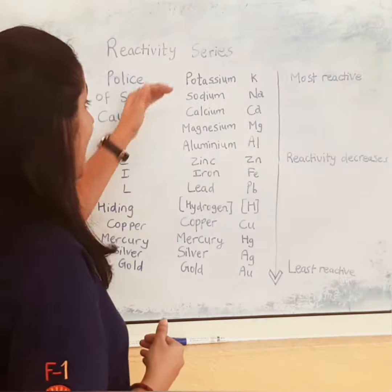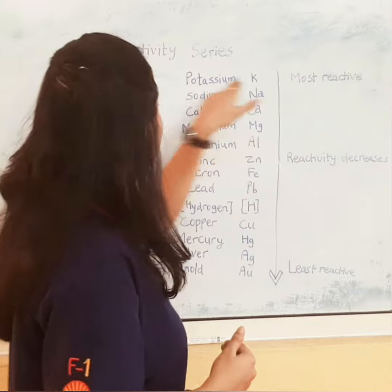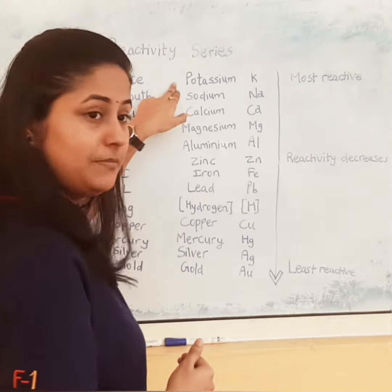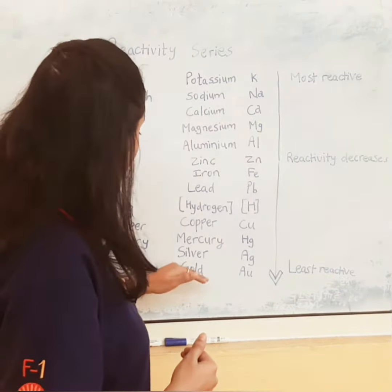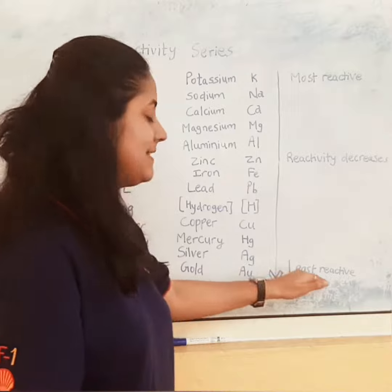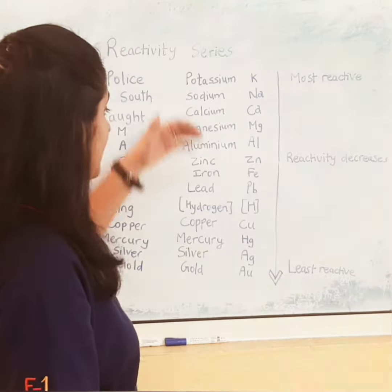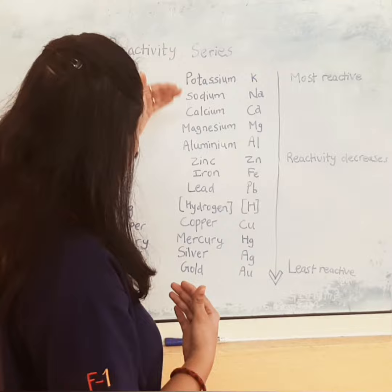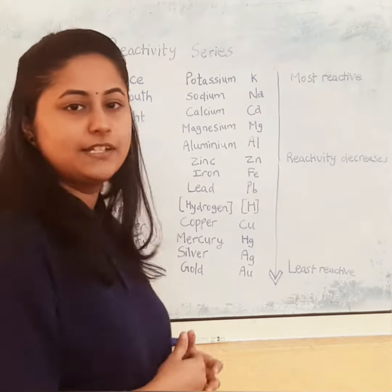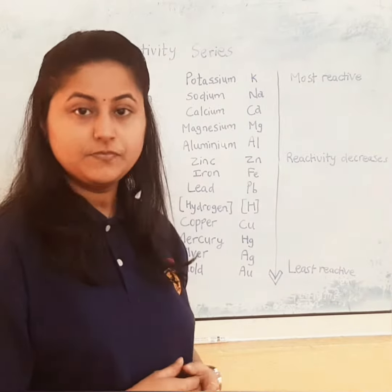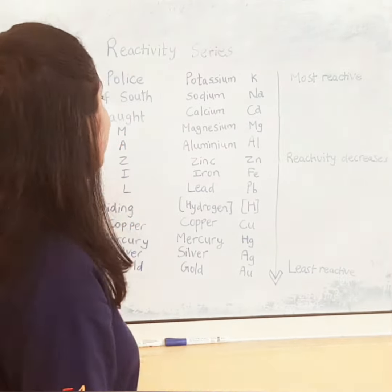As you can see, the most reactive is potassium. As we go down this reactivity series, gold is the least reactive. But it's of course very difficult to remember these names in the manner how it is given here. So let's try to remember it in the most easy way.